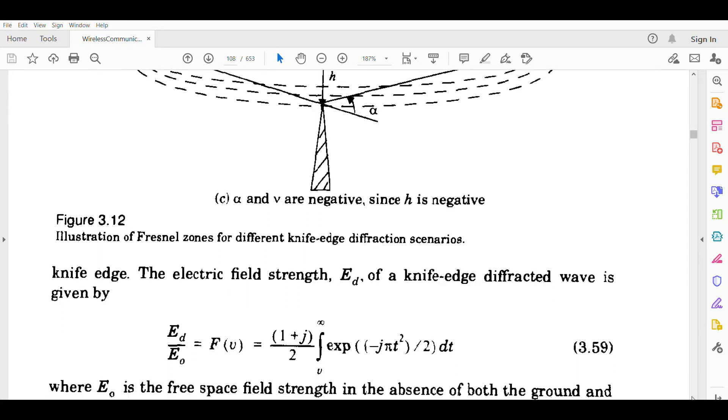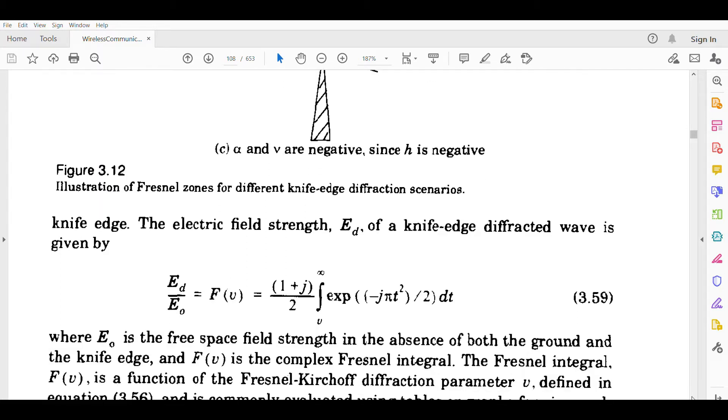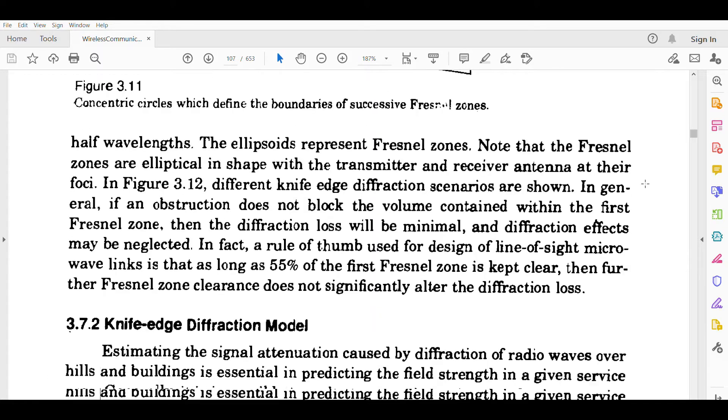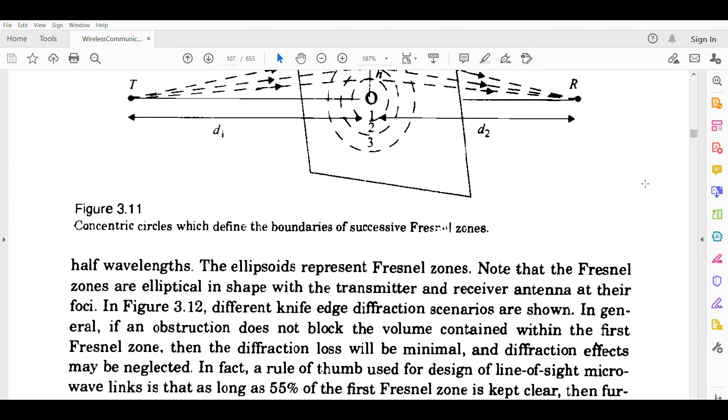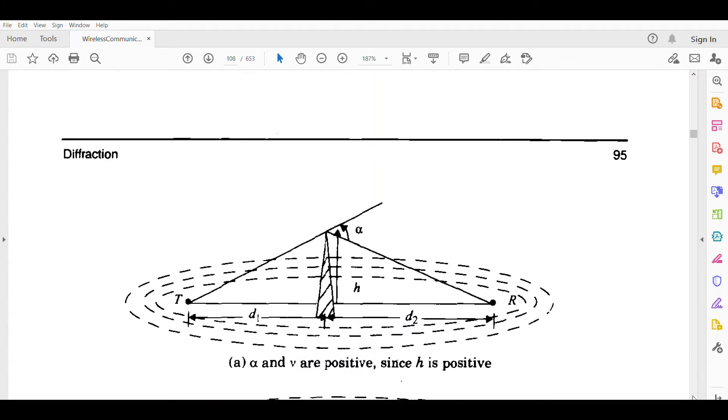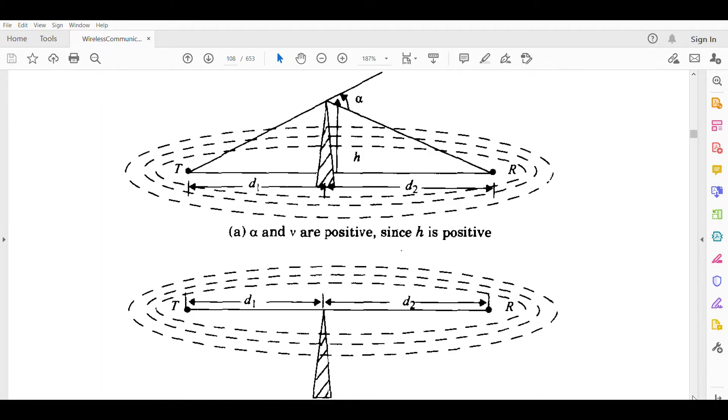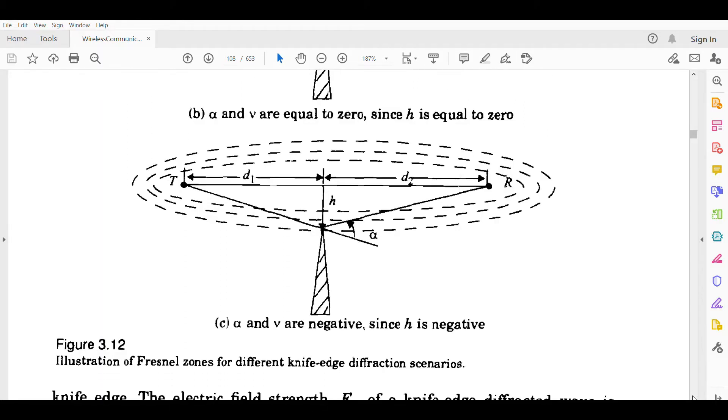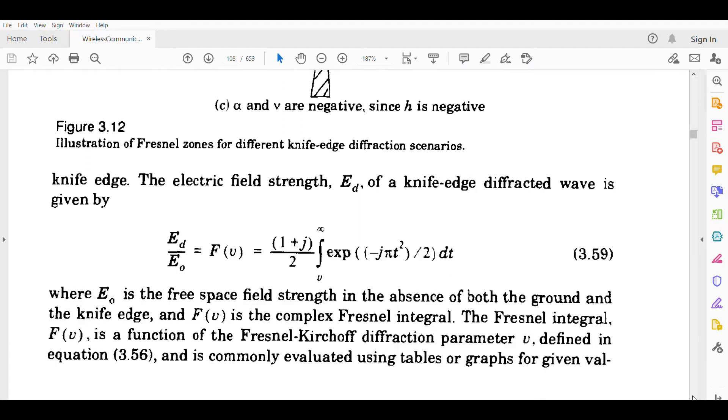This field strength is measured using a function of a complex Fresnel integral. Every derivation you don't have to do, you don't have to derive everything, but understand the simplification form. E_0 is the free space field strength in the absence of both the ground and the knife edge, and this is the complex Fresnel integral function.